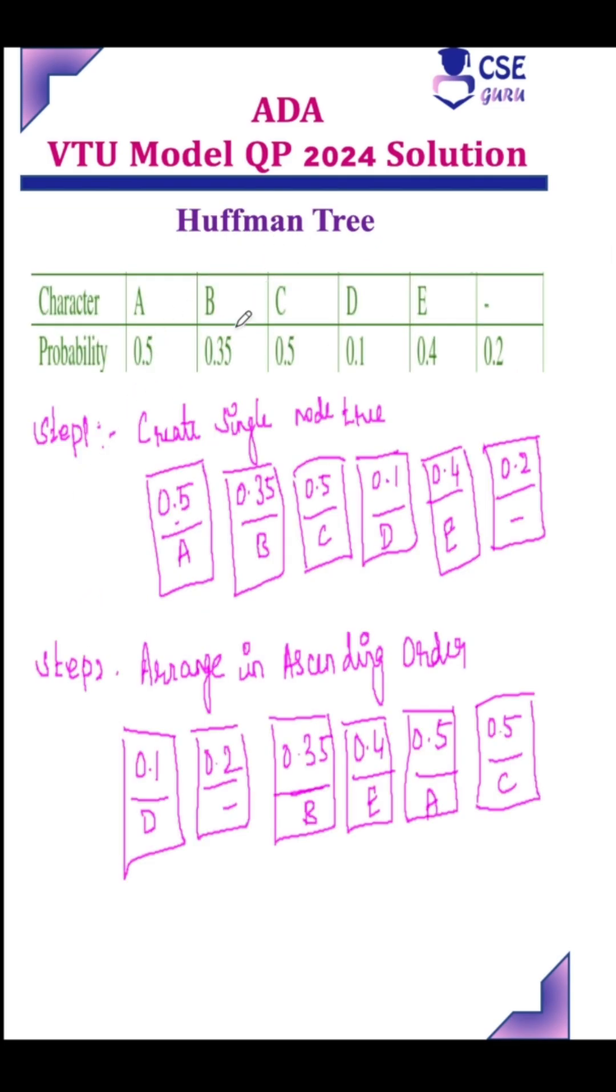To construct the Huffman tree, first step: create a single node tree for the given data. Probability and its corresponding character, you have to place it to construct the single node tree.